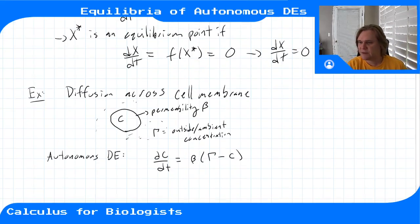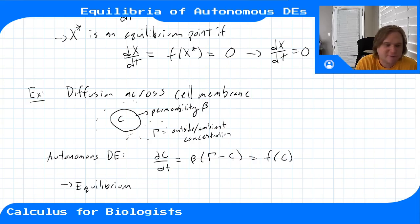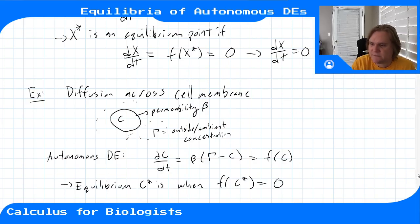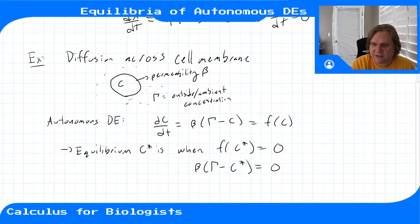This differential equation has an equilibrium. We can call this f(c), and since there's no time dependence it's autonomous with state variable c. The equilibrium c* is where f(c*) = 0, which gives us β(γ - c*) = 0, so c* = γ.